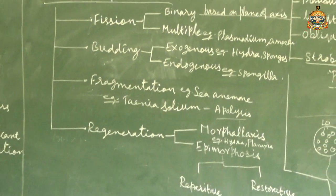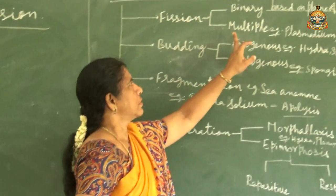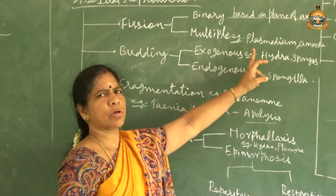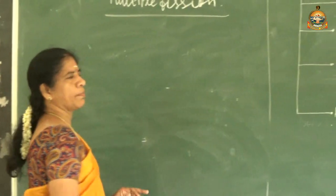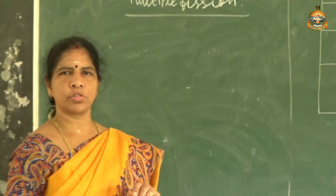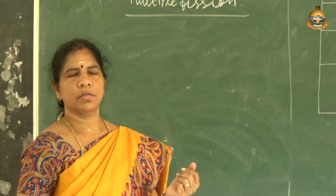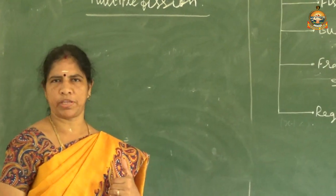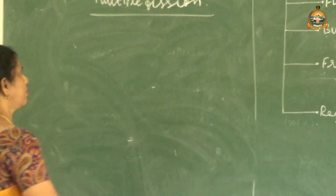Now let us see multiple fission. Examples include Plasmodium and Amoeba. You know Plasmodium - it is a protozoan parasite that causes malaria, whose life cycle you study in detail. Multiple fission in Plasmodium occurs in two stages - the schizont stage and the sporozoite stage.